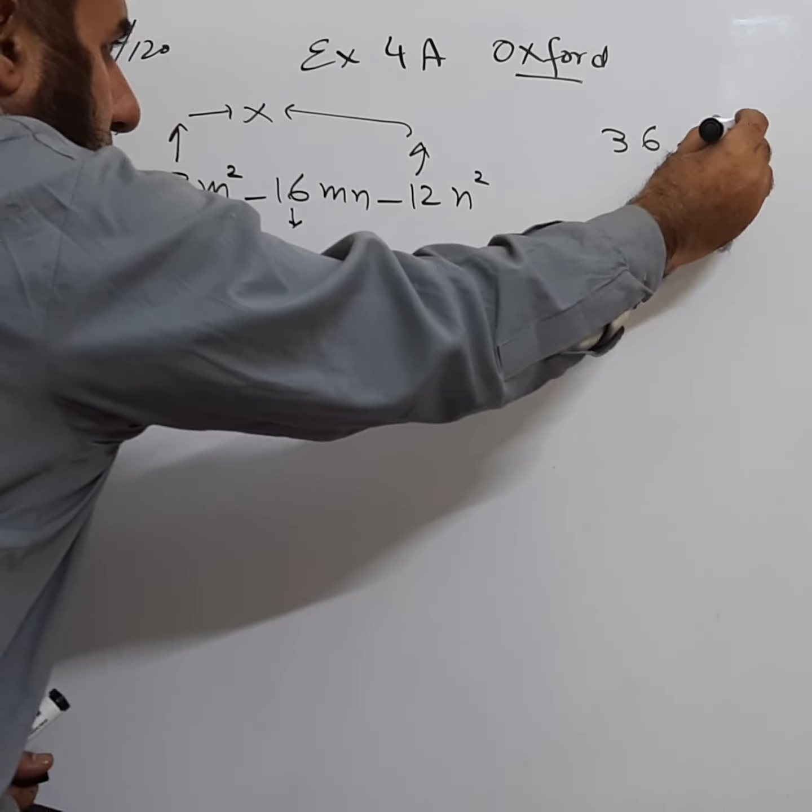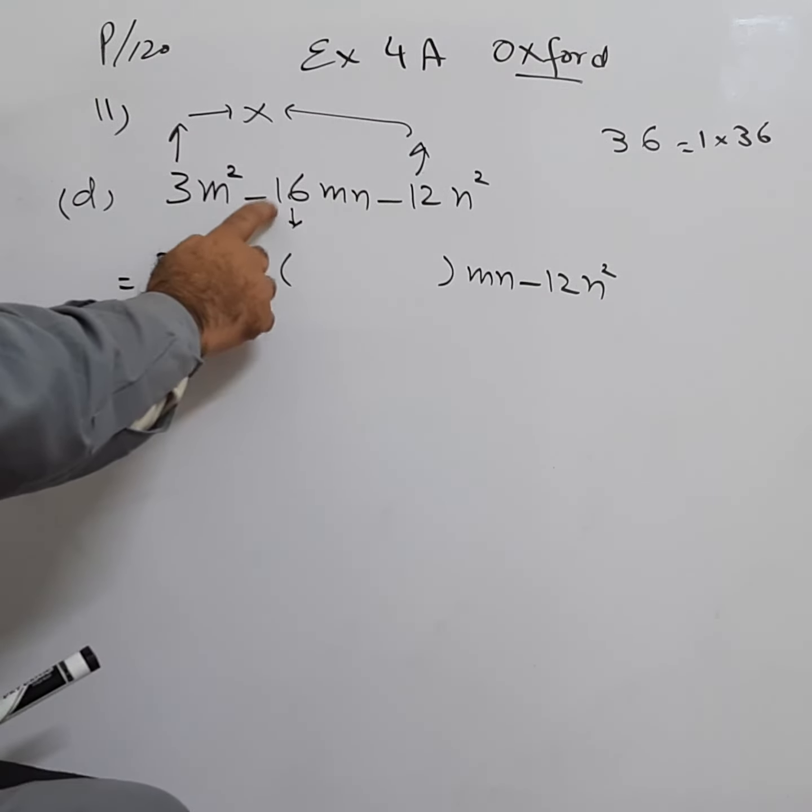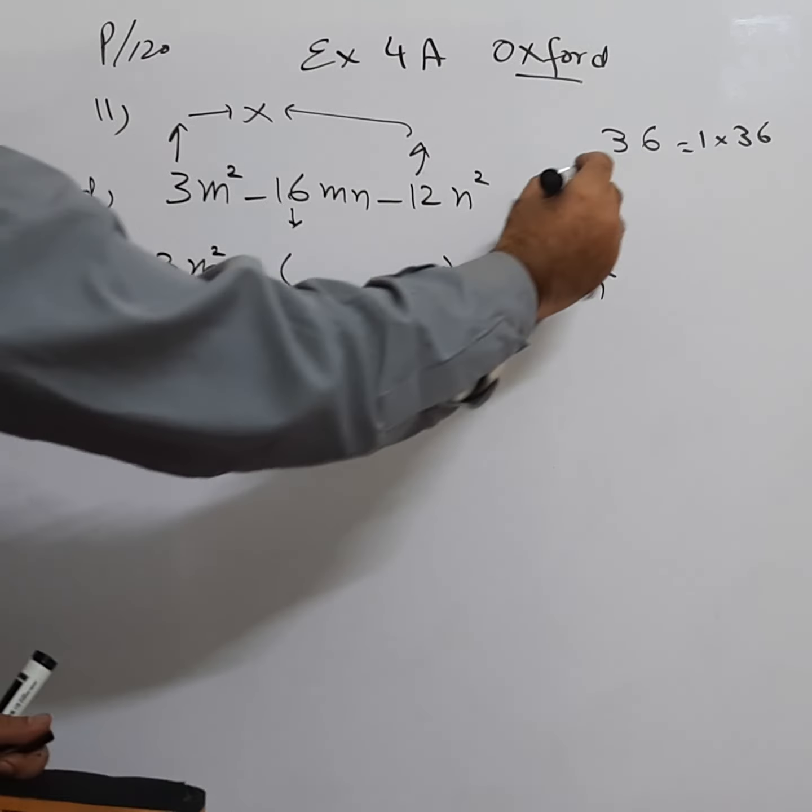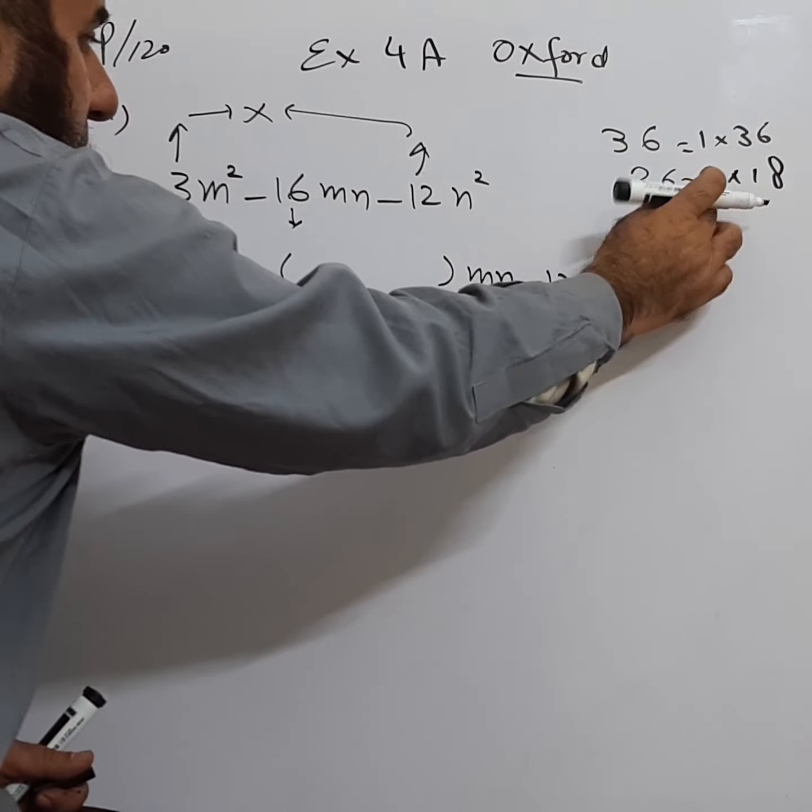So we start: 1 times 36. If we add these two it becomes 37, if we subtract it becomes 35, but here we have 16. Then 36 is equal to 2 times 18. If we add it becomes 20, if we subtract becomes 16.